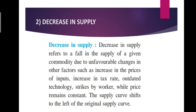The second point is decrease in supply. Decrease in supply means supply has fallen due to unfavorable changes in other factors, like prices of inputs increased, tax rate increased, technology is outdated, workers went on strike. But you must remember that price remains constant. Decrease in supply refers to a fall in the supply of a given commodity due to unfavorable changes in other factors such as increase in the prices of inputs, increase in the tax rate, outdated technology, strikes by workers, while price remaining constant. So the supply curve shifts to the left of the original supply curve.